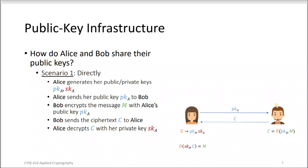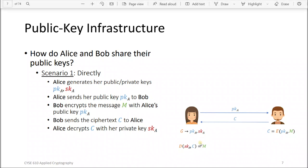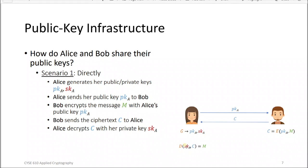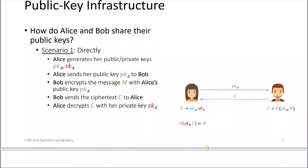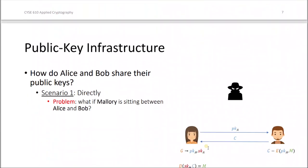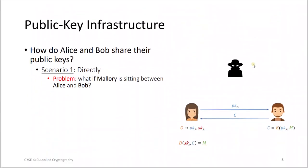These are the steps of sending the public key directly. She generates the public key and secret key. First she gives him the public key, he encrypts the message with her public key, then he sends her the ciphertext, and then she decrypts the ciphertext to recover the message.